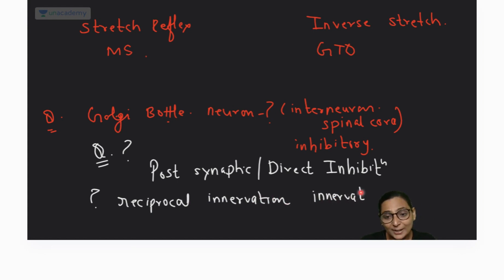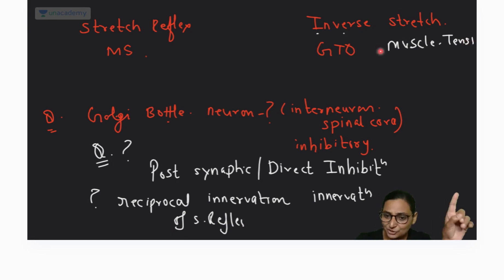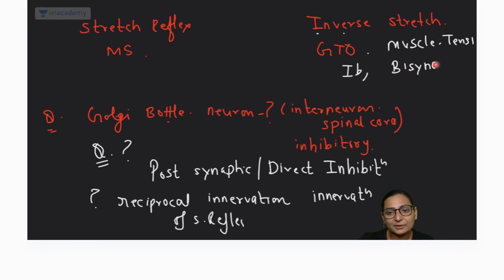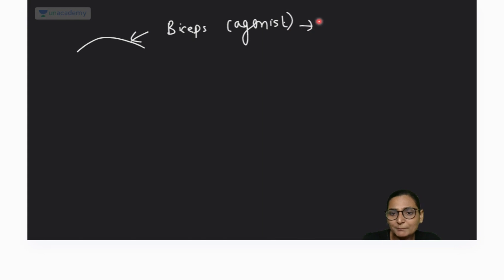The Golgi bottle neuron is involved in the reciprocal innervation of the stretch reflex — this is totally different from the inverse stretch reflex. Inverse stretch reflex involves muscle tension detected by the GTO; the afferent is Ib and it is a disynaptic reflex. Reciprocal innervation: when the agonist (e.g., biceps) contracts via the stretch reflex...